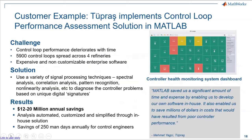Apart from developing control strategies, most process plants have hundreds of process control loops and loop behavior deteriorates with time, making monitoring a very manual task. Tupras, a Turkish refining company, developed innovative software in MATLAB to diagnose controller problems and give optimal tuning values for the loops. This saved an estimated 12 to 20 million dollars annually. Apart from that, they were also able to save hundreds of engineer hours by automating this extremely manual task.